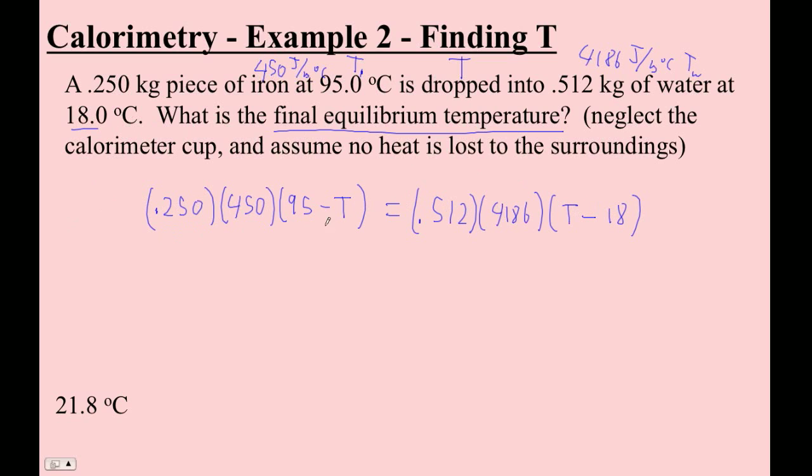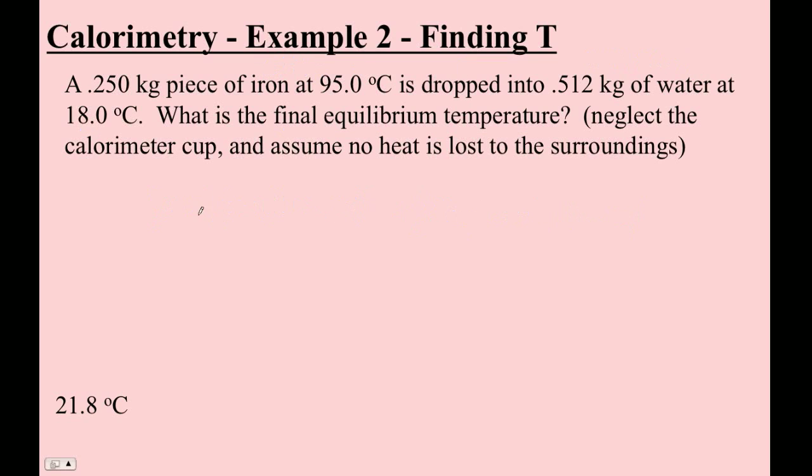At this point, you can just stab the numbers in and just solve away. But what I'm going to do is I'm going to solve it without putting the symbols in there. So I'm going to go mass of the iron, C of the iron, T of the iron minus T. Equals mass of the water, C of the water. And then I'm going to go T minus T of the water.